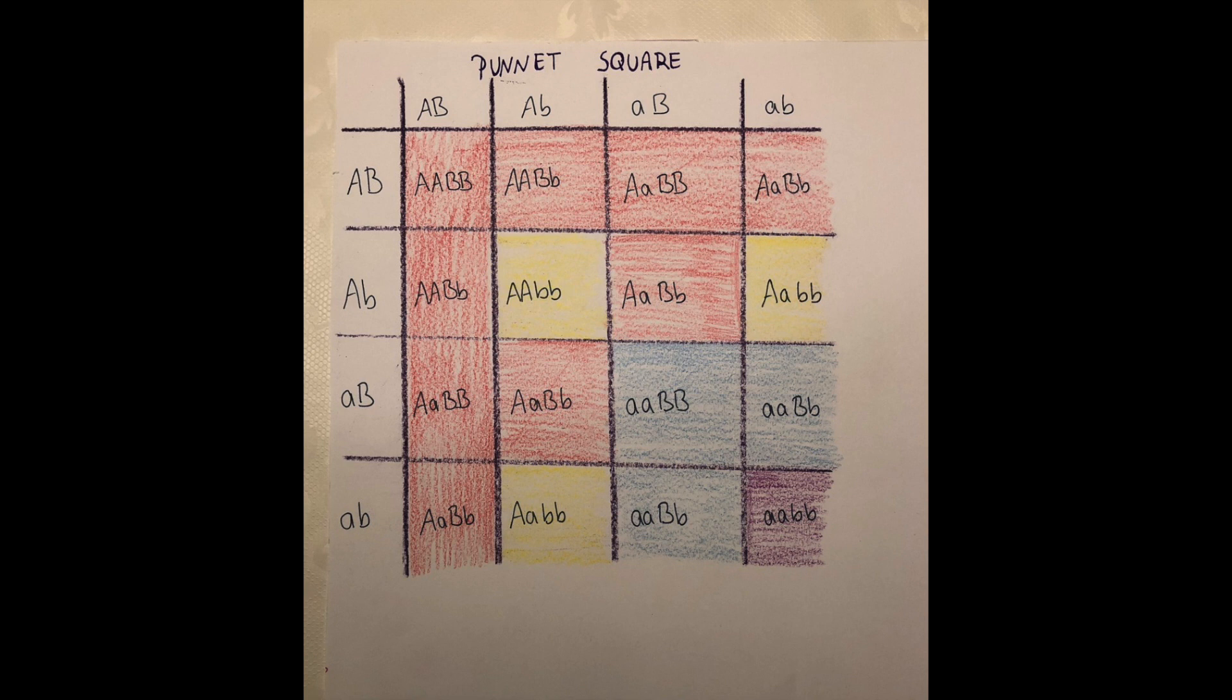Here in the Punnett square you can see that we have a ratio of 9 to 3 to 3 to 1. So this means that 9 of them will express both dominant traits. Usually brown hair is the dominant trait and curly hair is dominant. So when one of the parents has curly hair, then it's usually more likely that the child will have curly hair also.